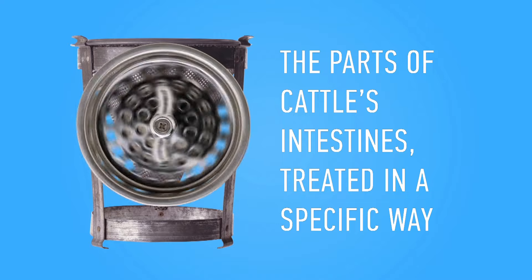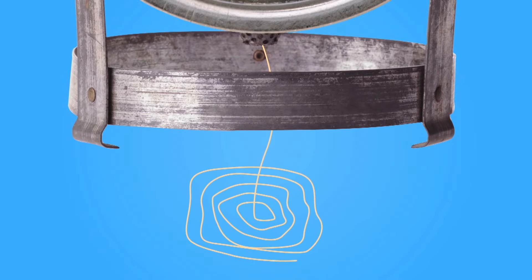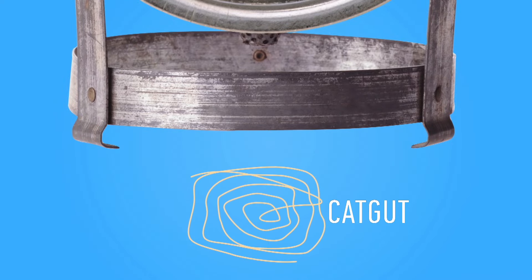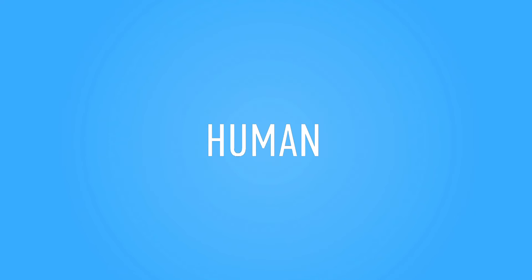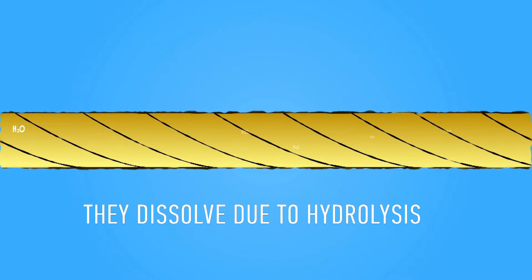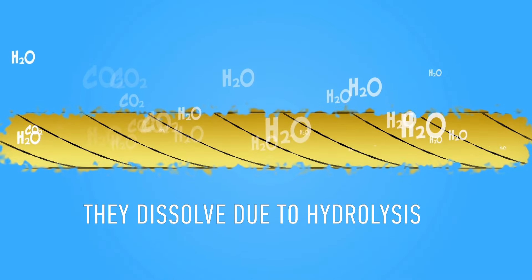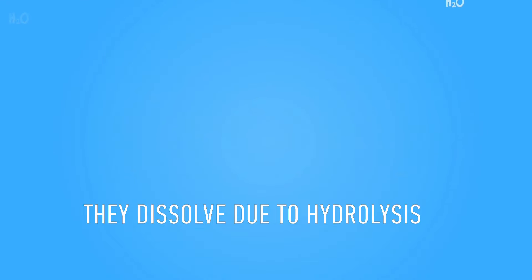Yes, these threads were and are still called catguts. They basically dissolve inside the human body — or to put it differently, rot away. The sutures in my hand are the modern ones. They consist of co-polymer glycolide, and they dissolve due to hydrolysis — no rotting, just decomposition to water and carbon dioxide.